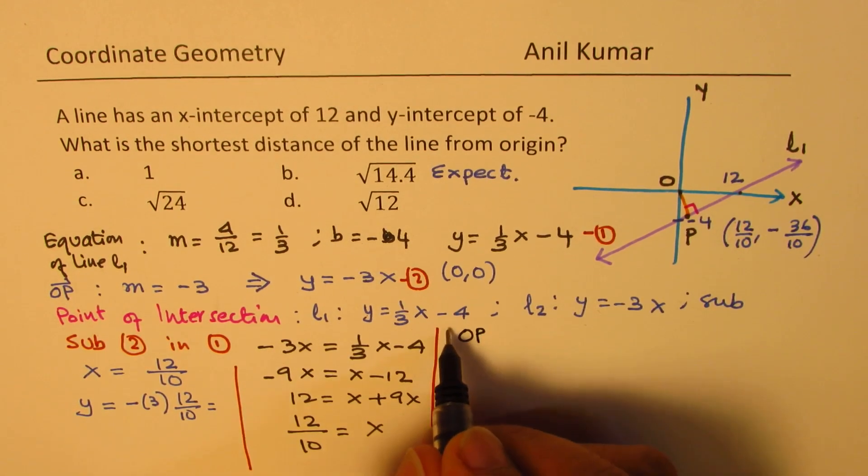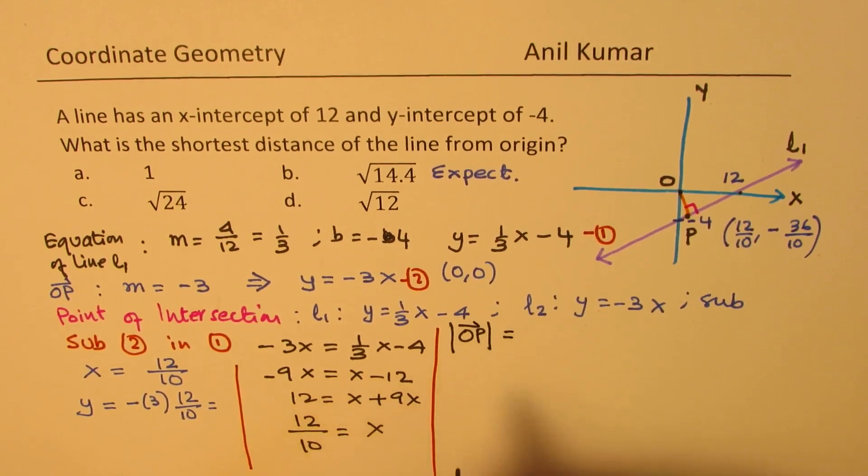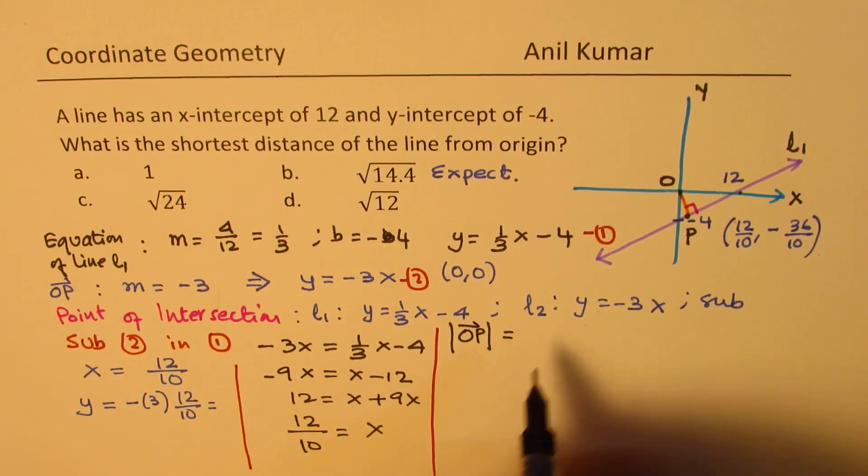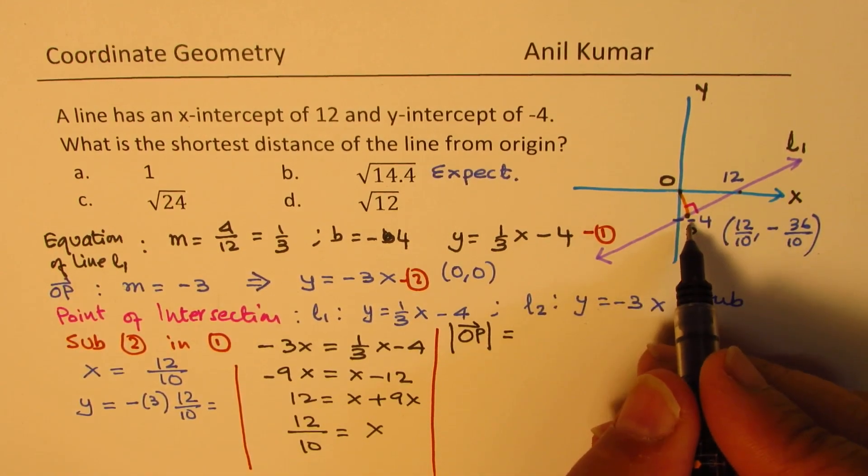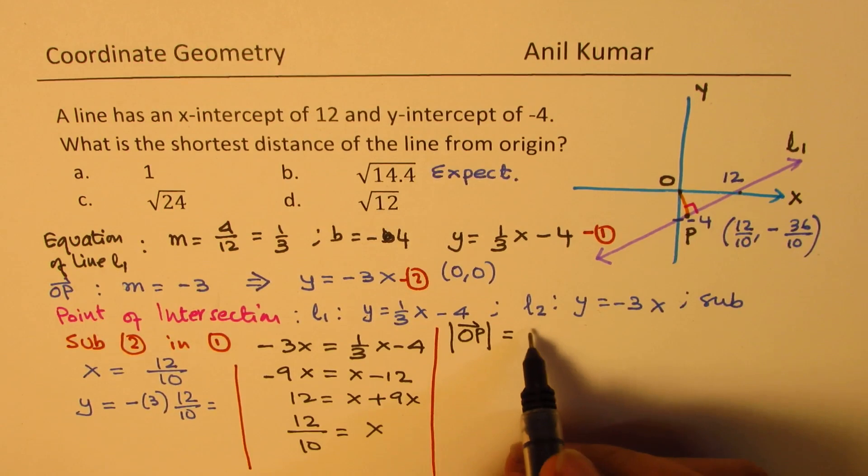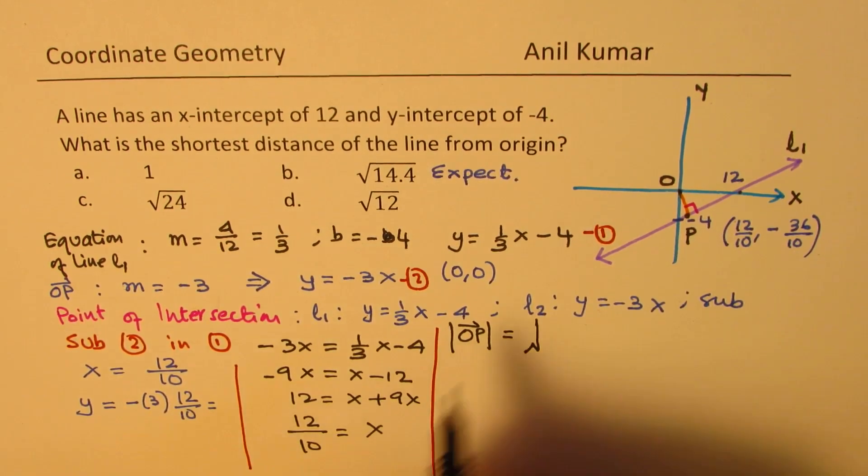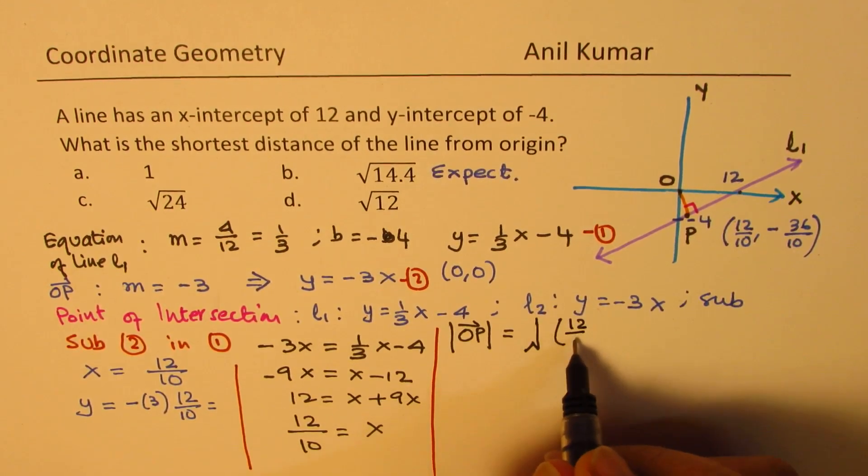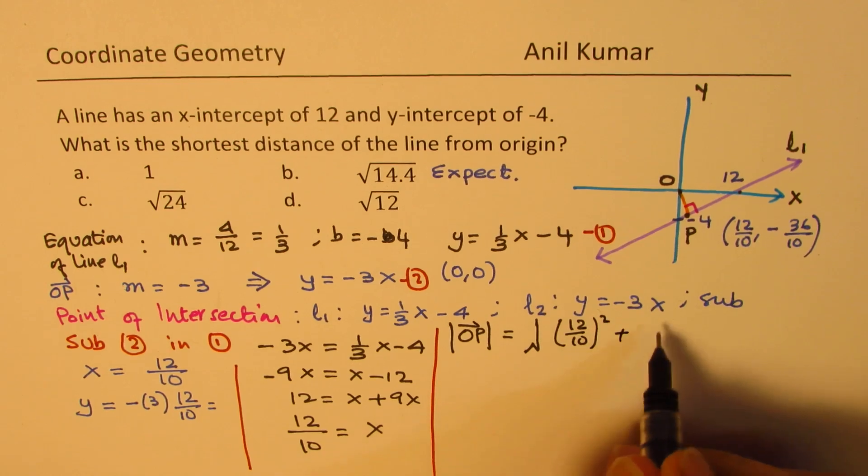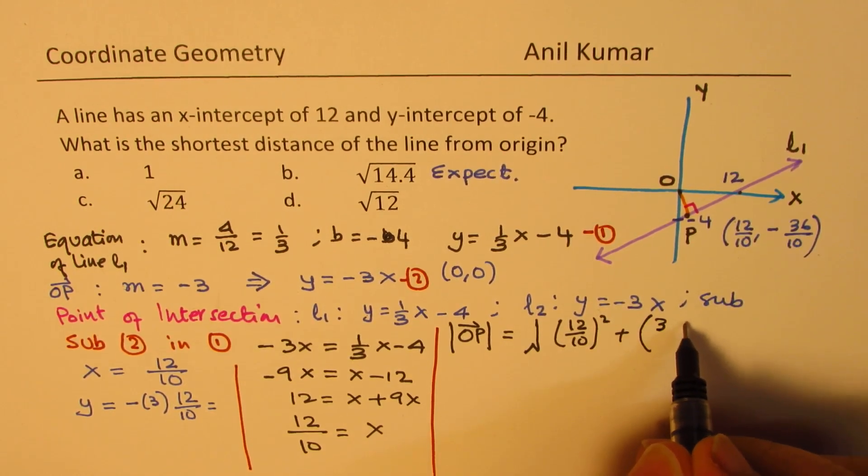So, distance OP, we may write like this. This is the distance OP, always a positive value. From O to this, treat this as a right angle triangle. So, we get the X value square, which is 12 over 10 square, plus the Y value square, which is 3 times 12 over 10 square.